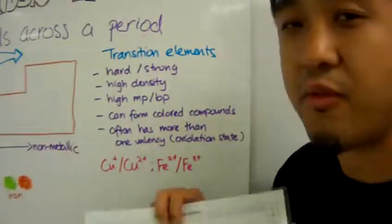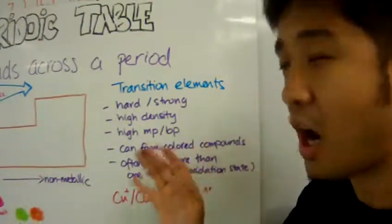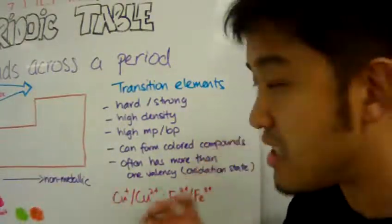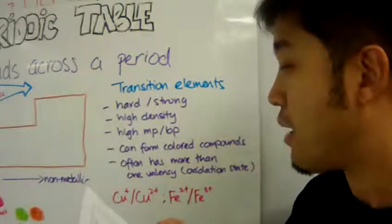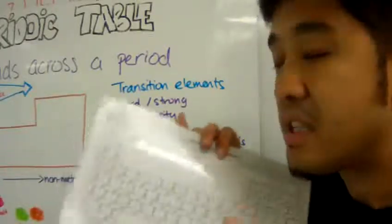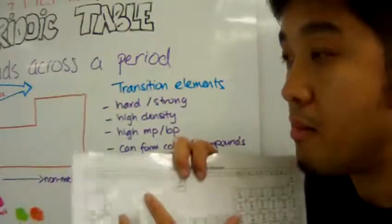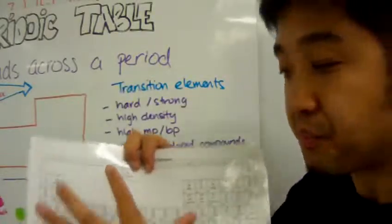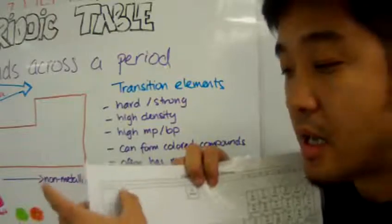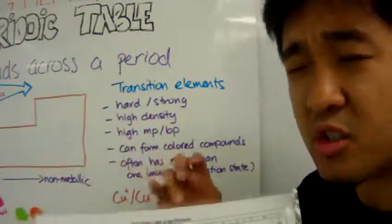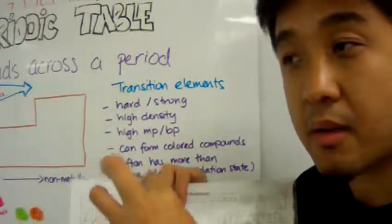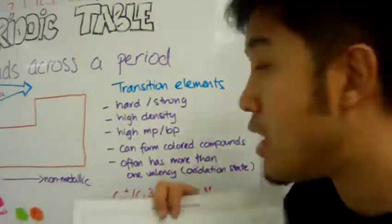Now, transition elements have very cool properties. In that they are hard and strong, they're solid, they have high density, high melting and boiling point. And the reason being why they are hard and has a high melting and boiling point is simply because when they form those metallic bonds, those metallic bonds do not have one delocalized electron for each positive ion. Instead, it has two or more, usually it has two or more delocalized electrons for every one positive ion in that metallic element.